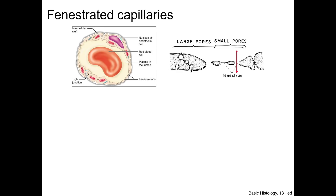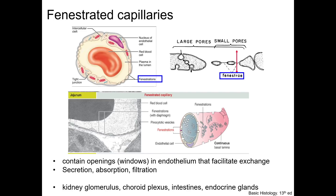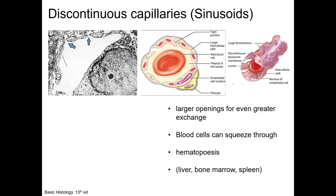The second type of capillary is the fenestrated capillary. These vessels have pores, or fenestrae — windows — that may or may not have a diaphragm. In this image from the jejunum, the fenestrae actually have diaphragms. These openings facilitate regulated exchange of larger molecules. These capillaries are found in organs or tissues where molecular exchange is important, such as intestines, endocrine glands, and around kidney tubules. The kidney glomerulus has fenestrated capillaries that lack diaphragms.